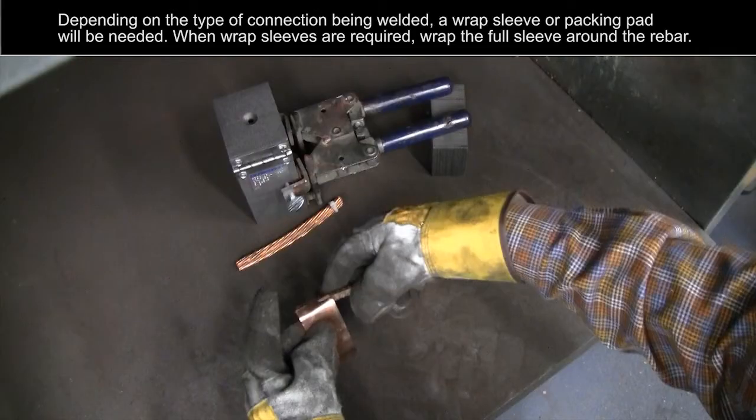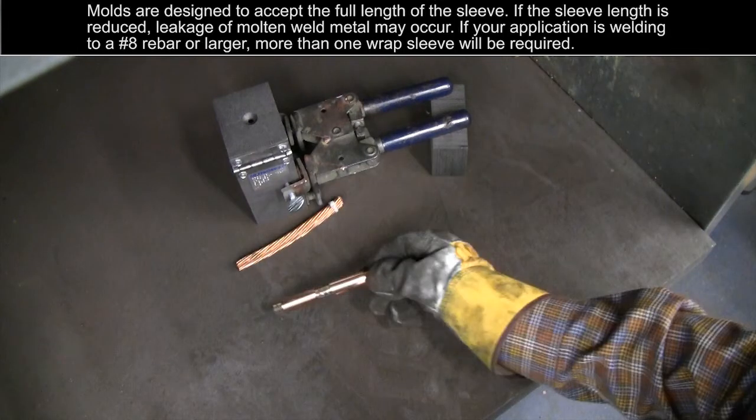Depending on the type of connection being welded, a wrap sleeve or packing pad will be needed. When wrap sleeves are required, wrap the full sleeve around the rebar. Molds are designed to accept the full length of the sleeve. If the sleeve length is reduced, leakage of molten weld metal may occur.